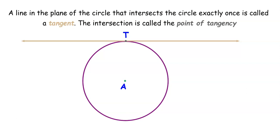In this case, the beige line at the top of the screen that intersects the circle at point T is a tangent line because it intersects the circle centered at A once and only once.